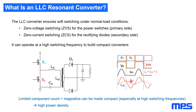The LLC can ensure soft switching for all switches: zero voltage switching for the primary half-bridge power switches, and zero current switching for the secondary rectifying diodes. Because it uses soft switching on both sides, it's easier to operate at higher switching frequency, which means smaller magnetics and smaller capacitors. Combined with the LLC's limited part count, you can make a high power density power supply.